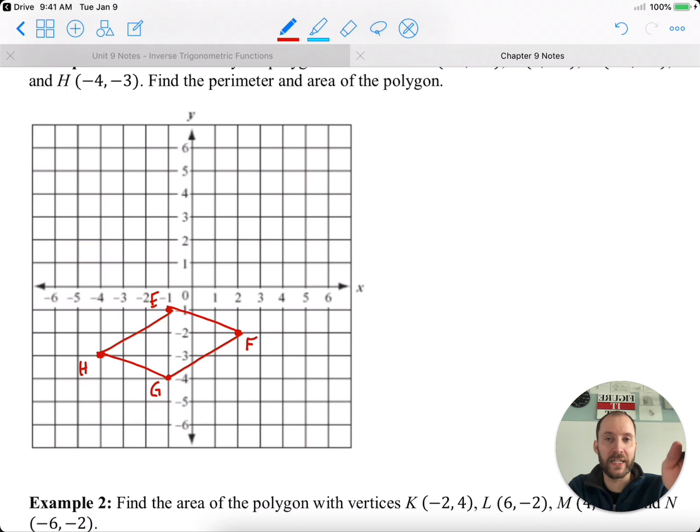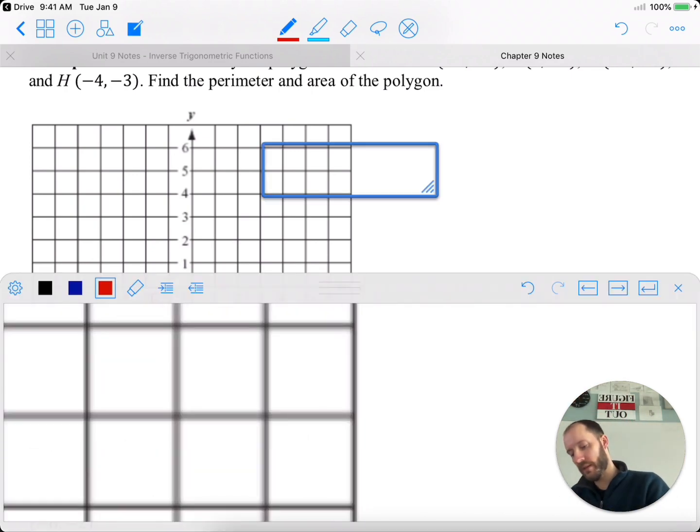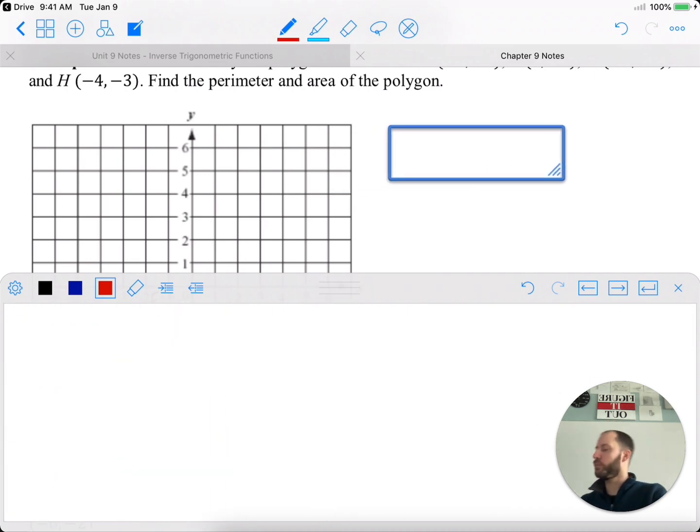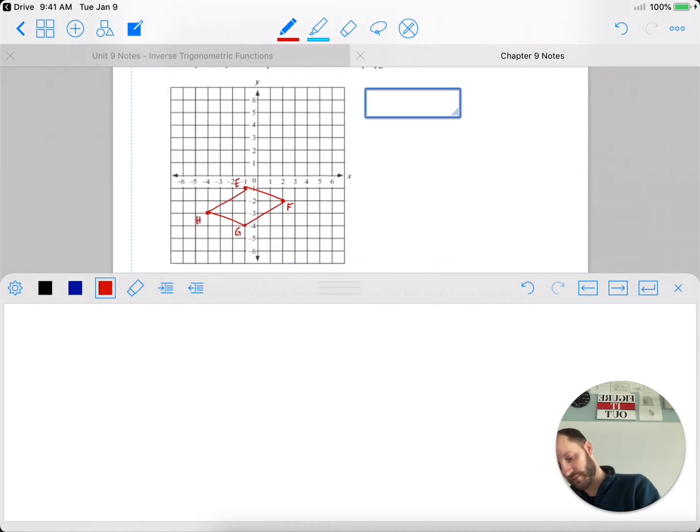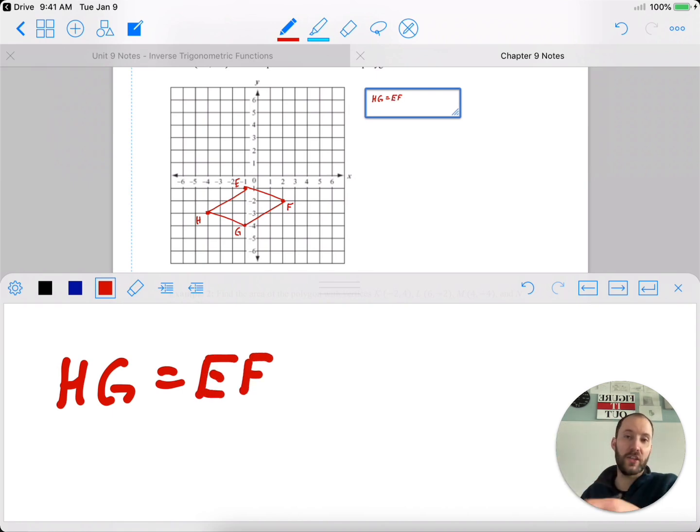To find the perimeter, though, because it's a parallelogram, if we find HG, we'll also get EF. If we find HE, we also get GF. So finding the length of two sides, then doubling each of those to get the whole length. So we'll start with perimeter - HG equals EF. Those two sides do the same.